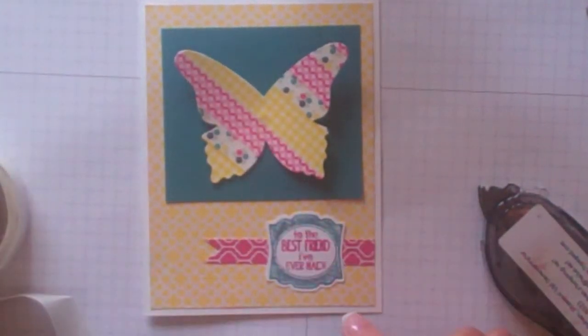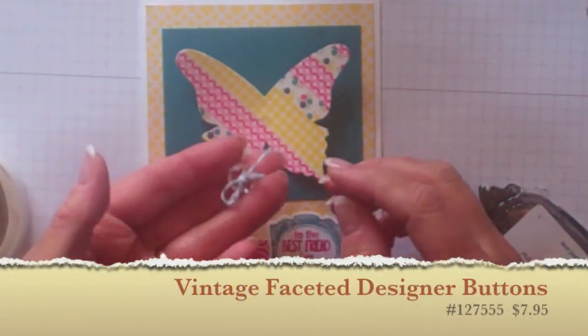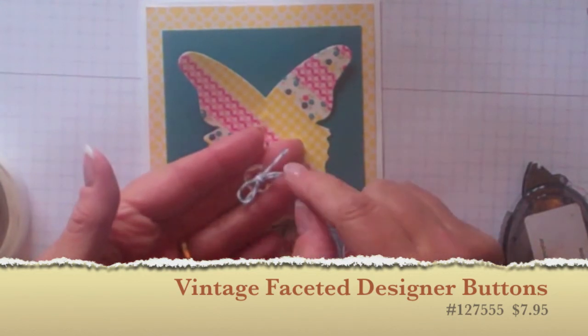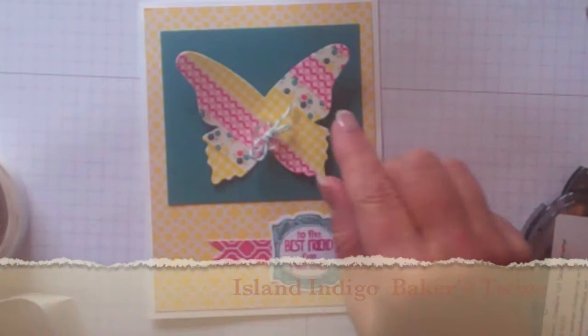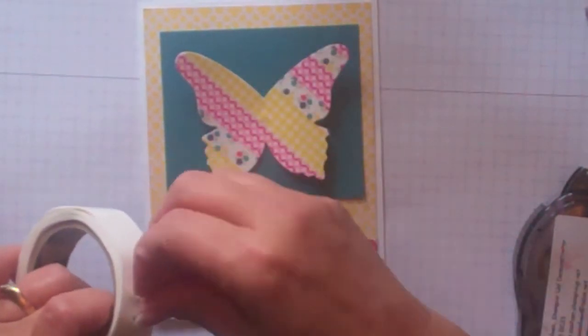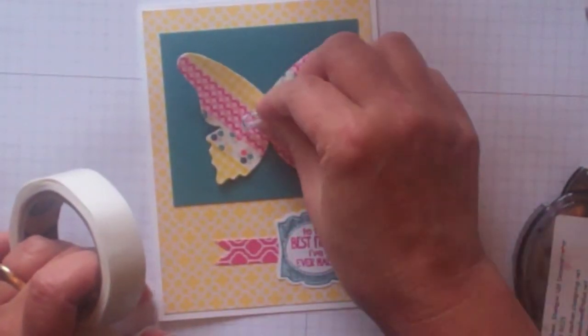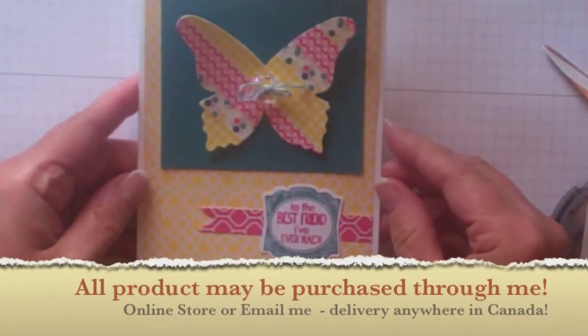And it looks kind of bare so I went ahead and added a little bit of our indigo baker's twine to one of our beautiful little vintage faceted buttons. And again I'm just going to attach that with the glue dot. So there's our finished card.